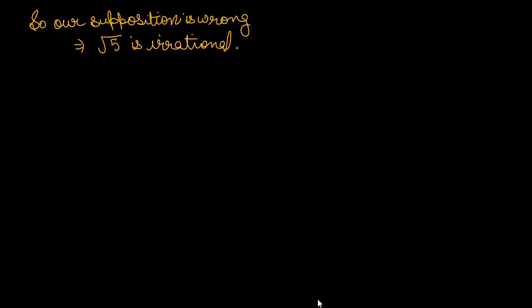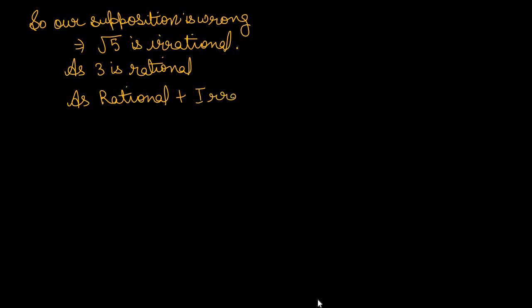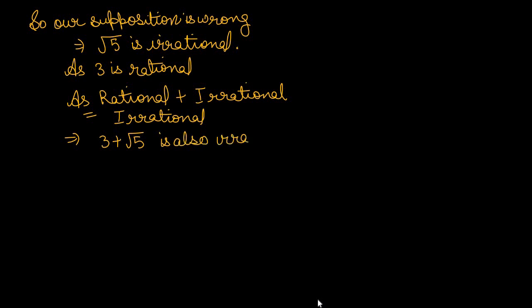For the second part, we must prove that 3 + √5 is also irrational. We have already proved √5 is irrational, and 3 is a rational number. When any rational number is added to an irrational number, the result is also irrational. Therefore, 3 + √5 is also irrational.